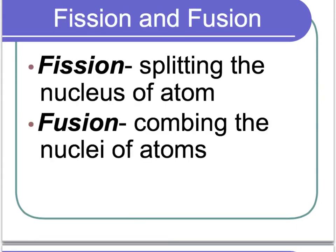Moving on, we're going to talk about nuclear fission and fusion. People tend to get these mixed up, but fission is when you're splitting the nucleus of an atom, and fusion is when you're combining the nuclei of two or more atoms. You can think of fission as coming apart, and fusion — think of fusing — as coming together.